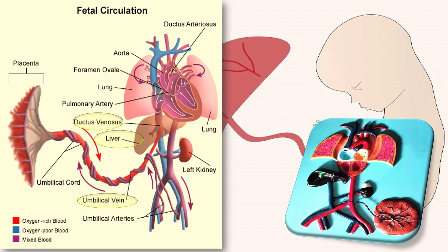The ductus venosus stream passes across the right atrium through a physiological defect in the atrial septum called the foramen ovale to the left atrium. From here the blood passes through the mitral valve to the left ventricle and hence the aorta. The blood from the right ventricle bypasses the lungs to enter the descending aorta via the ductus arteriosus, which connects the two vessels.